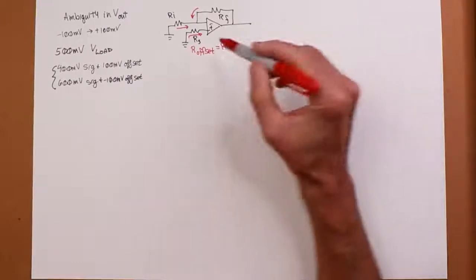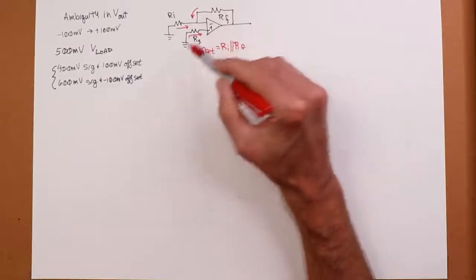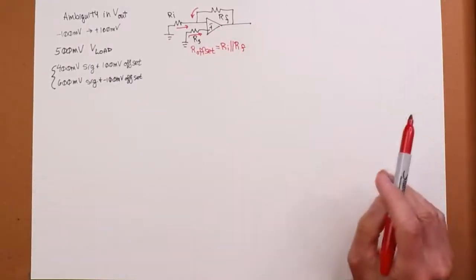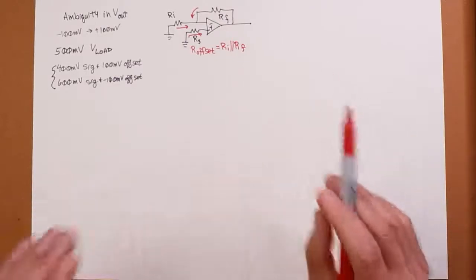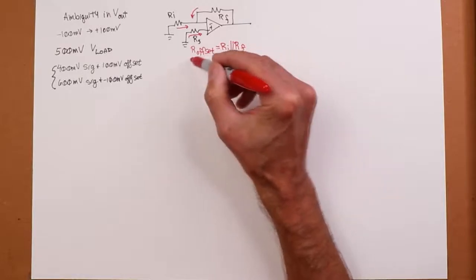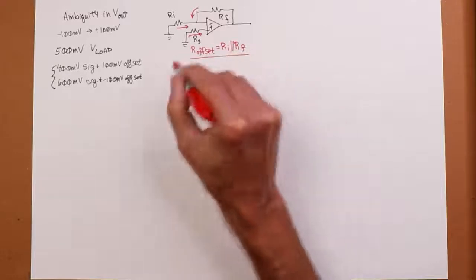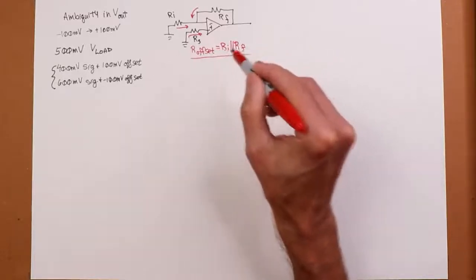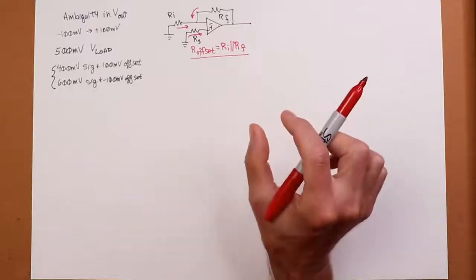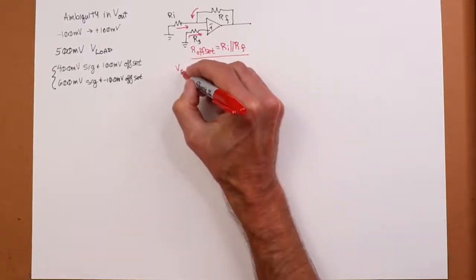Now, the text goes through the general case where you have maybe a non-matched situation. And it derives some equations. All I'm going to say is, if you really care about DC offset, you're going to do this. You want to do this. And if you do this, if R offset is equal to RI in parallel with RF, then we have a nice simple equation for our output offset voltage.